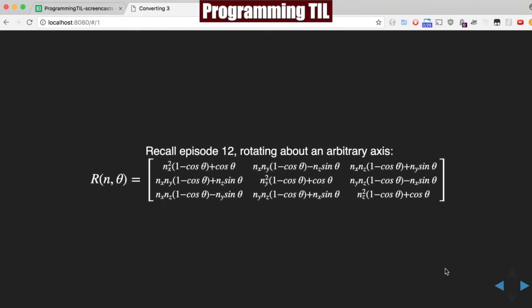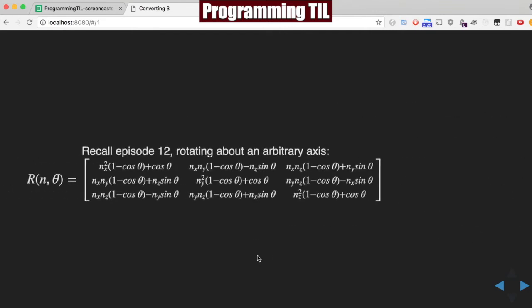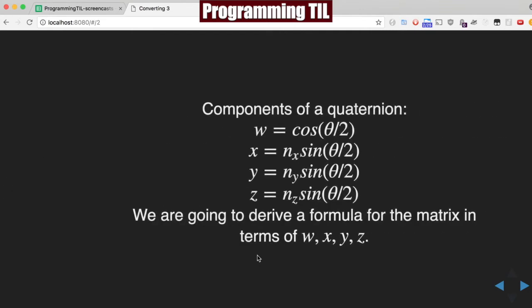If you recall from episode 12, we have rotation about an arbitrary axis with this really big formula for the matrix. We need to solve this in terms of quaternions. We have cosine theta over 2, and x sine of theta over 2, and y and z sine of theta over 2, representing w, x, y, and z respectively. We need to derive the same matrix in terms of w, x, y, and z.